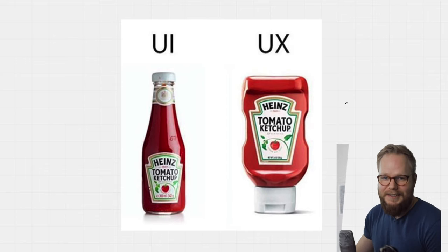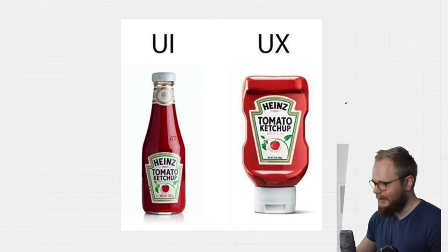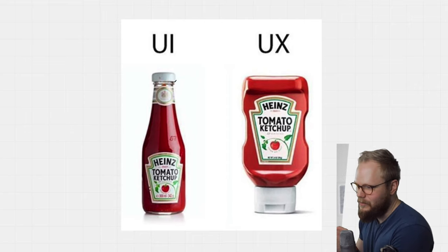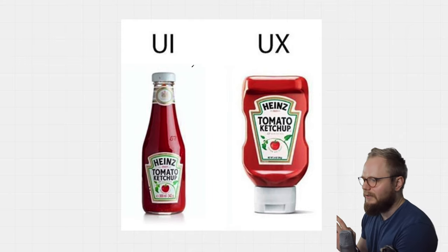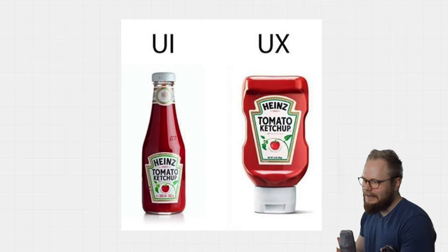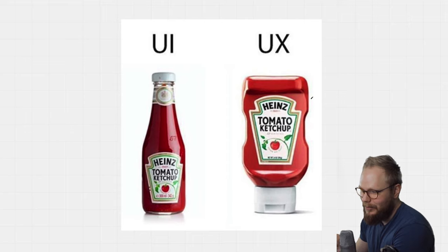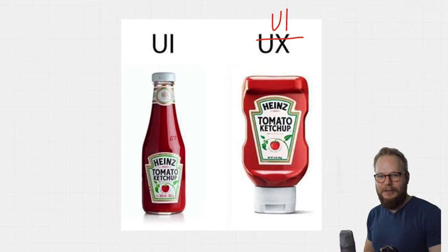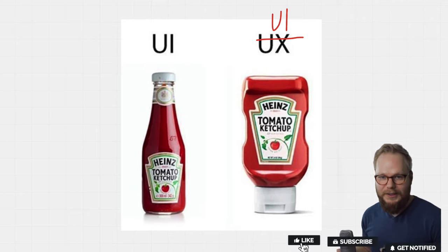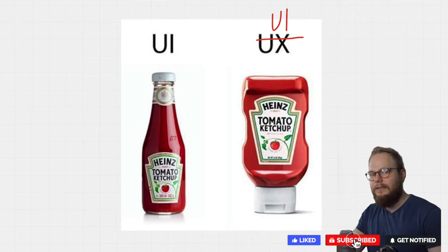Let's start with this one — the debate of the ketchup bottle. In this example, UI is the typical Heinz tomato ketchup which you cannot get anything out of, and the UX bottle is this conveniently, ergonomically shaped interface. But that's a bit ridiculous, because both of them are UIs. Both of them are interfaces — an example of how the finished product looks, like floating mockups in portfolios. There is no experience point because experience happens when the user interacts with that product.